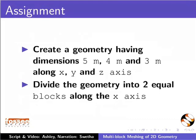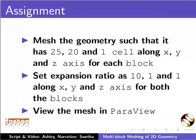As an assignment, create a geometry having dimensions 5m, 4m and 3m along X, Y and Z axis. Divide the geometry into 2 equal blocks along the X axis. Mesh the geometry such that it has 25, 20 and 1 cell along X, Y and Z axis for each block. Set expansion ratio as 10, 1 and 1 along the X, Y and Z axis for both the blocks. And view the mesh in Paraview.